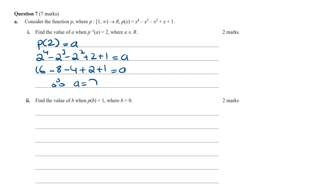Find the value of b when p of b equals 1, where b is larger than 0. p of b is going to be b to the power of 4 minus b cubed minus b squared plus b plus 1, and this is going to equal 1.